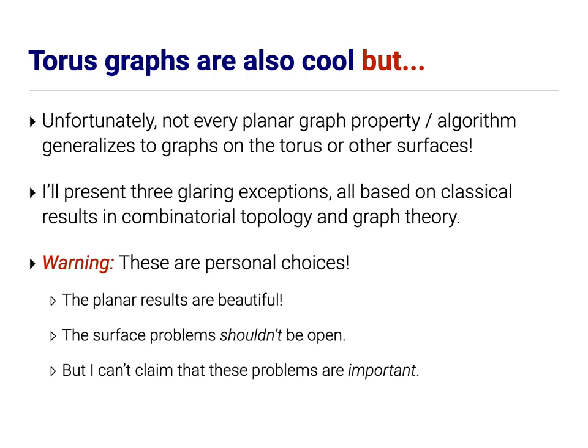And what I want to talk about today are three examples that I find particularly glaring. All based on classical results in combinatorial topology and graph theory, but where we have lovely, elegant algorithms in the plane. But as soon as we go to more complex surfaces, everything falls apart. These are personal choices. I'm taking the liberty of talking about things that I think are cool. In particular, I think the planar results are beautiful. And if that's all you get out of the talk, then I'll be very happy.